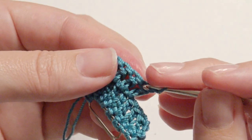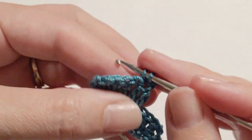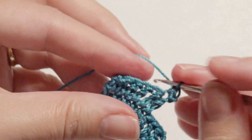Chain one and turn and work your single crochet in the next five stitches.